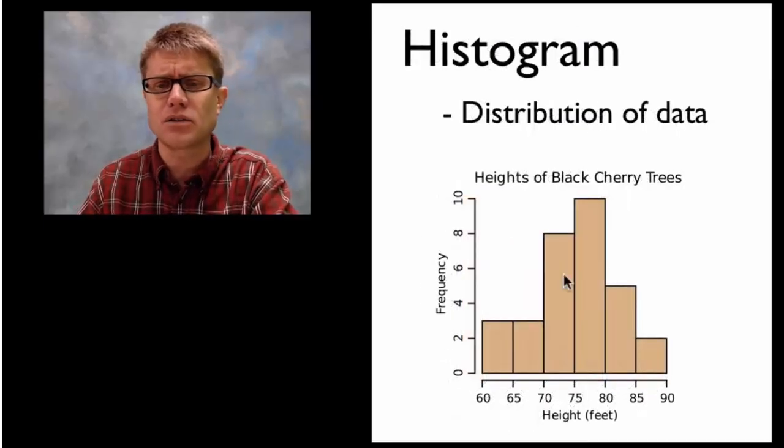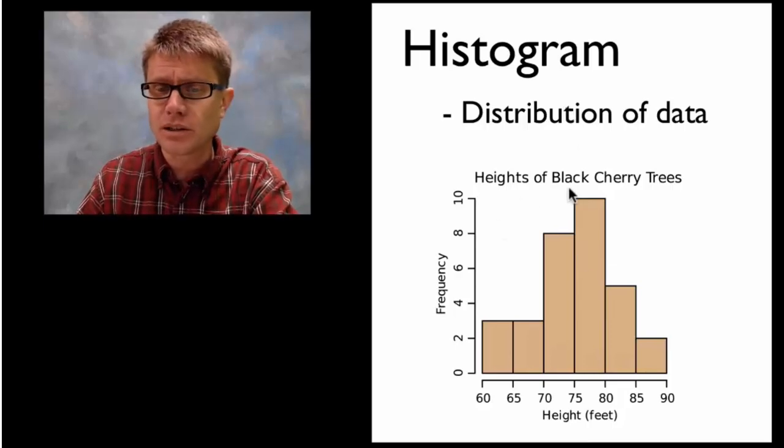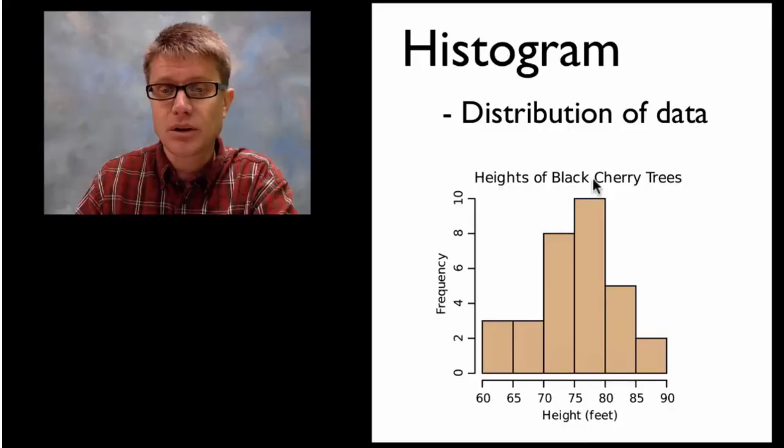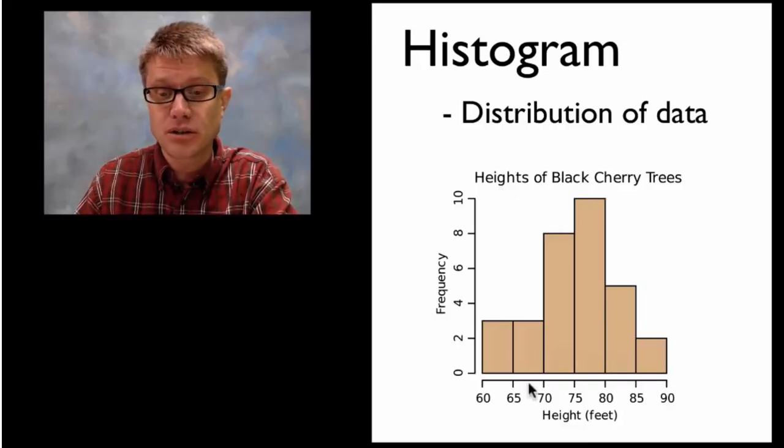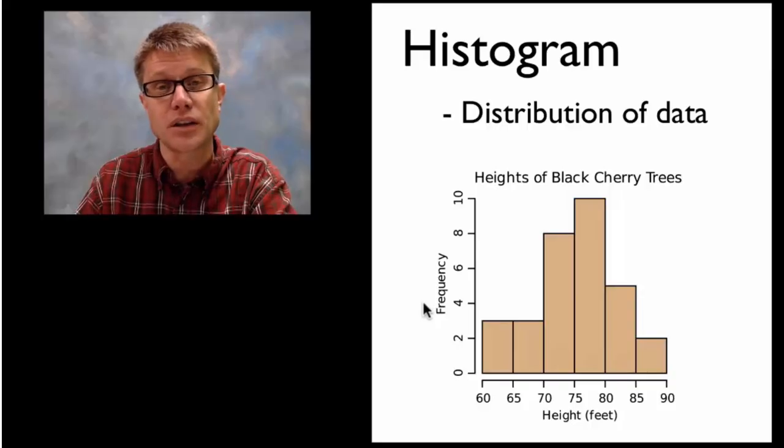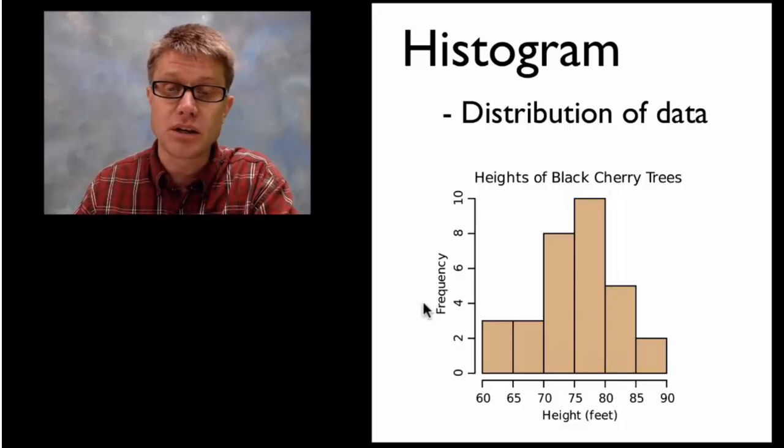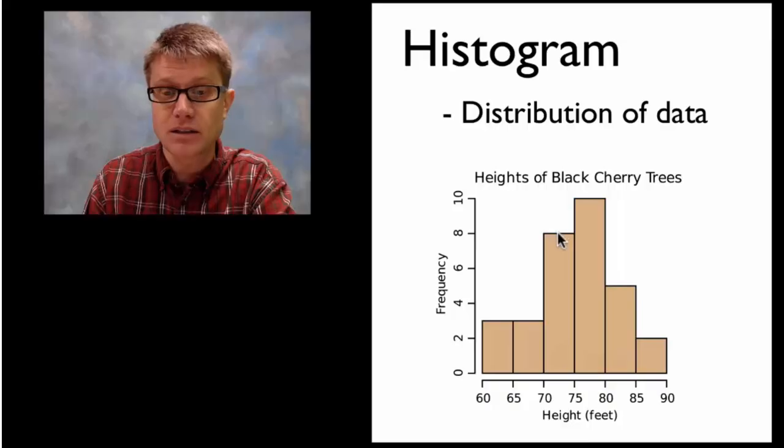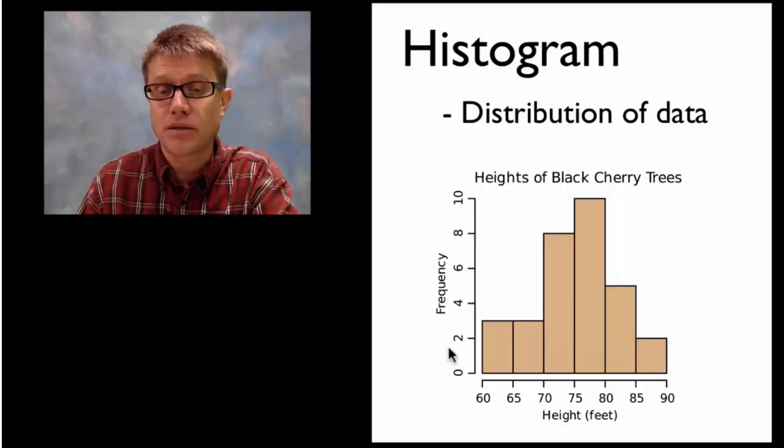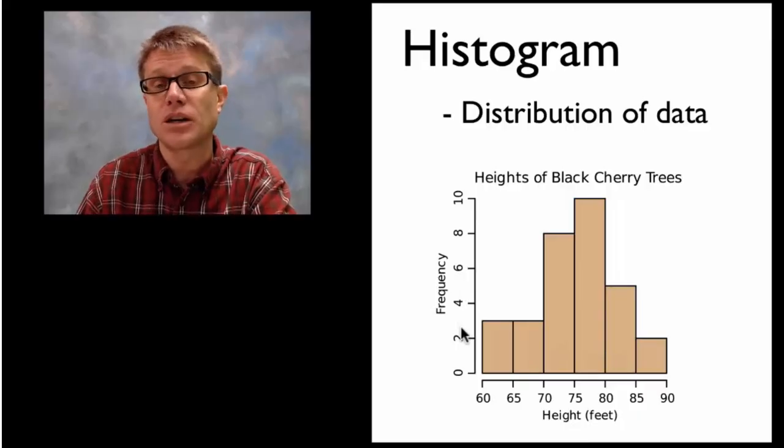What about a histogram then? A histogram is when we're looking at the distribution of data. So let's look at this histogram here. We're looking at the height of black cherry trees. We have different heights along the bottom, and then we just have the number of trees on the side. For example, how many of these cherry trees are going to be between the height of 70 and 75 feet? Well we'd look here and then we'd find that that's going to be 8. So let's say we're graphing human's height along the bottom, and then we're looking at the frequency. That would be a histogram.